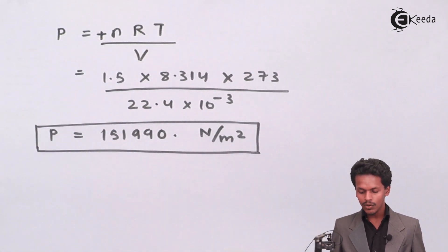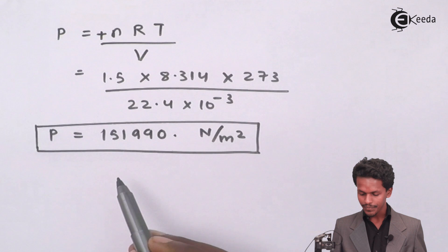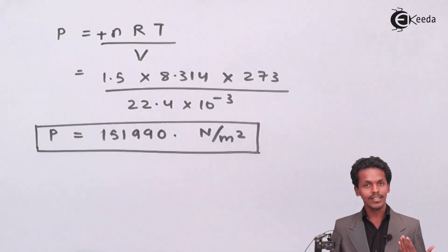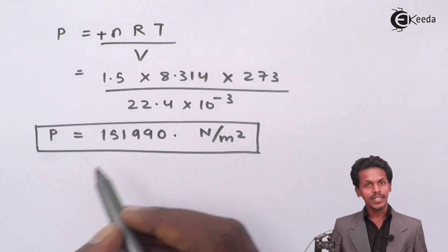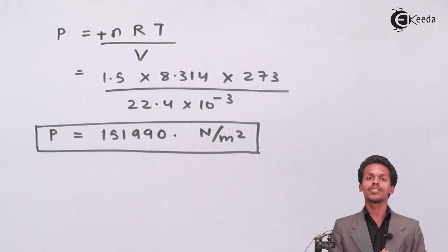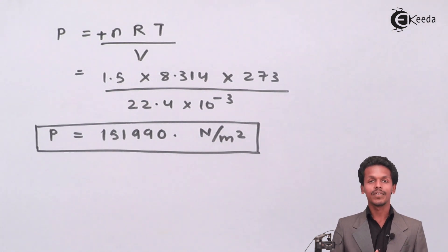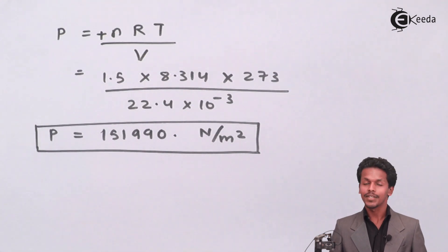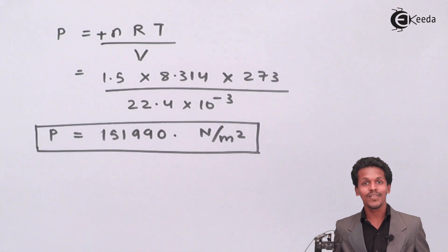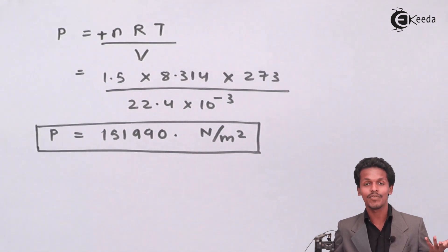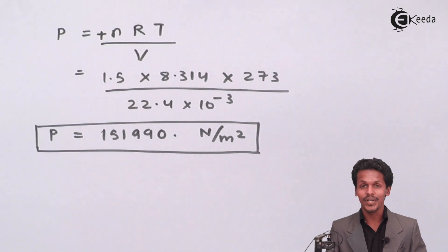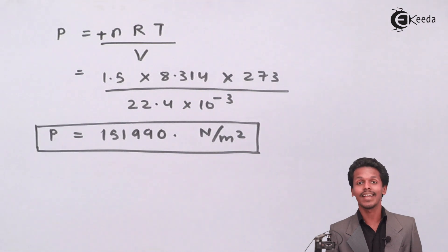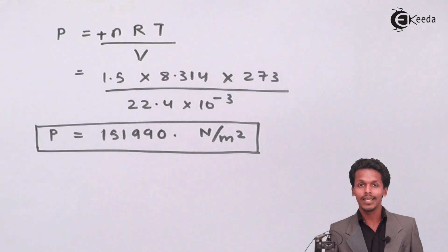We can also express the answer as approximately 1.51×10⁵ Pa. For reference, 1 atmosphere = 760 mmHg ≈ 1.013×10⁵ N/m² (Pascal). Thank you for watching. I hope you understood this numerical based on the ideal gas equation. Remember, the gas constant R is the most important factor. Try to solve more numericals, share this video with friends, and don't forget to subscribe to Ekeeda channel.